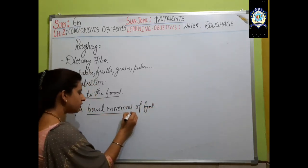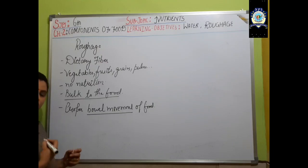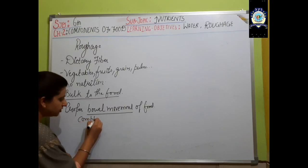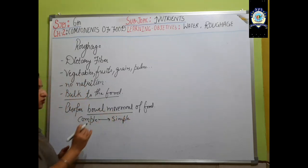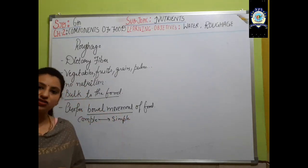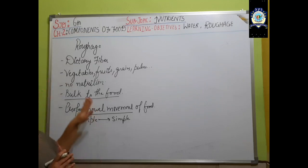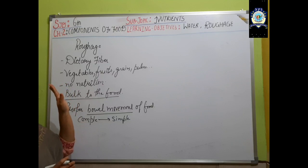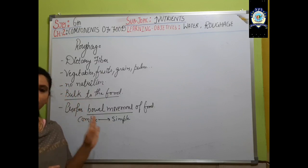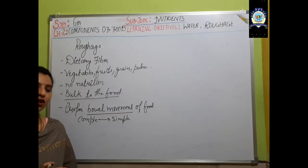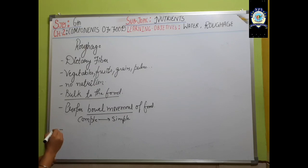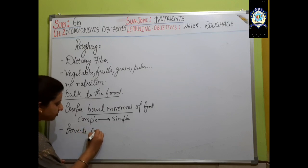Bowel movement means when we eat food through the mouth, digestion starts there and food converts from complex form to simple. This movement of the simple form of food through the digestive system is called bowel movement. If you have roughage or dietary fiber in your diet, it will help in easy movement of food inside the body and also prevents constipation.